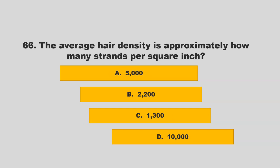The average hair density is approximately how many strands per square inch? Is it 5,000, 2,200, 1,300, or 10,000? If you chose B, 2,200, you are correct.